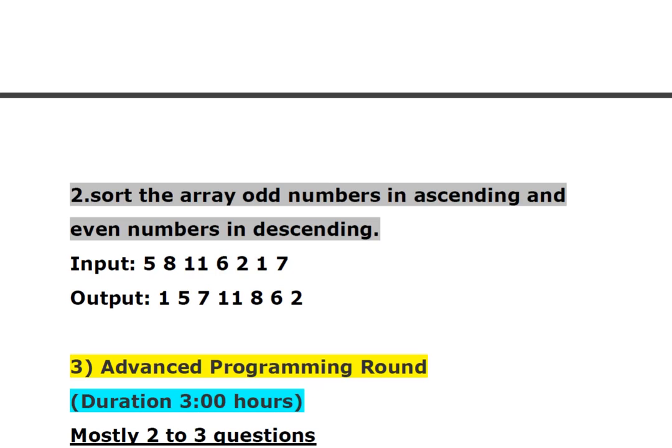For the sorting example, given the input 5, 8, 11, 6, 2, 1, 7 — the odd numbers are 1, 5, 7, 11 and should be printed in ascending order, while the even numbers 8, 6, 2 should be printed in descending order. So the output is: 1, 5, 7, 11, 8, 6, 2. This is the kind of logic expected in the simple coding round.